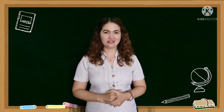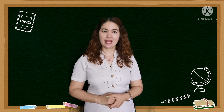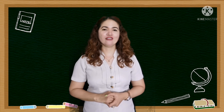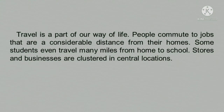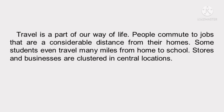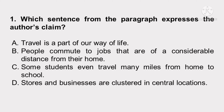I think you are ready to answer this activity. Have your pen and paper ready. Read the passages and answer the questions that follow. Write the letter of your choice. Travel is a part of our way of life. People commute to jobs that are a considerable distance from their homes. Some students even travel many miles from home to school. Stores and businesses are clustered in central locations. Which sentence from the paragraph expresses the author's claim? A. Travel is a part of our way of life. B. People commute to jobs that are a considerable distance from their homes. C. Some students even travel many miles from home to school. D. Stores and businesses are clustered in central locations.